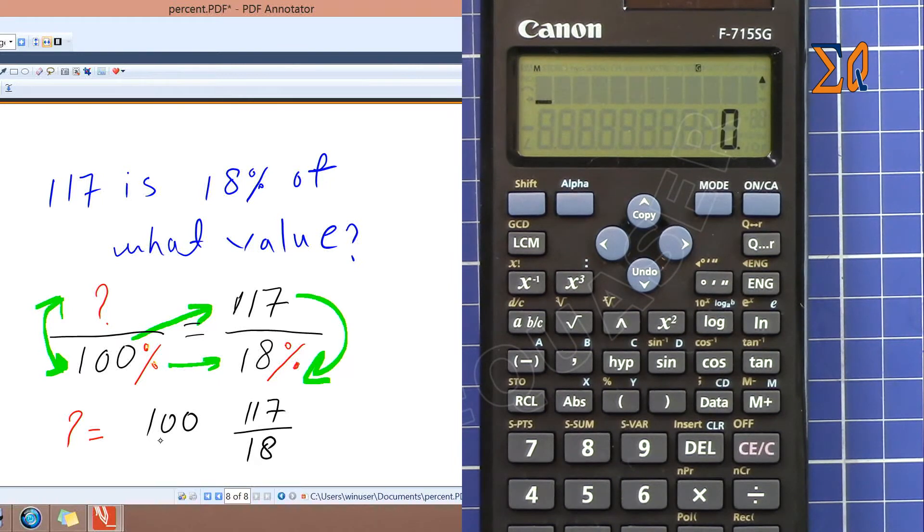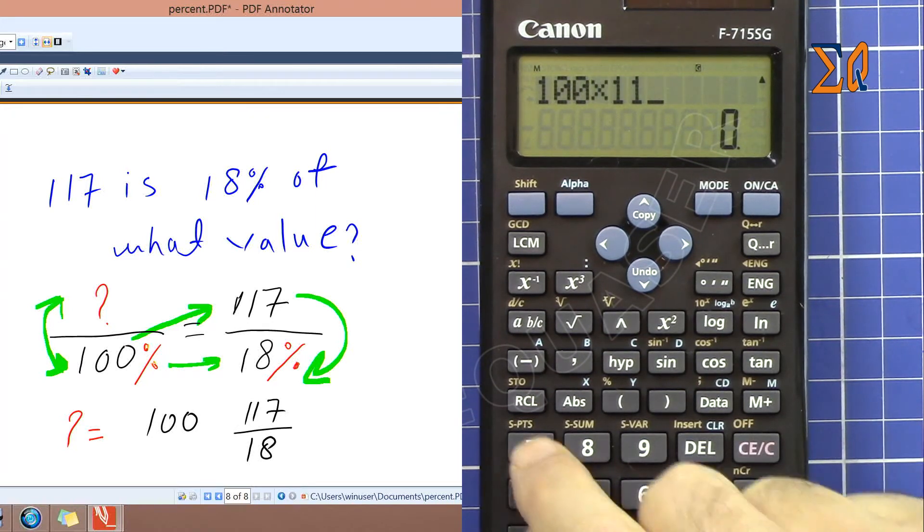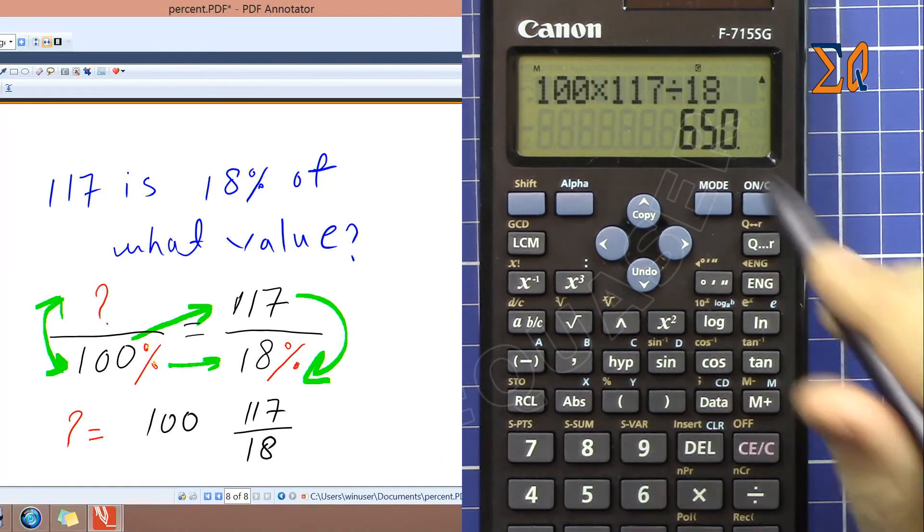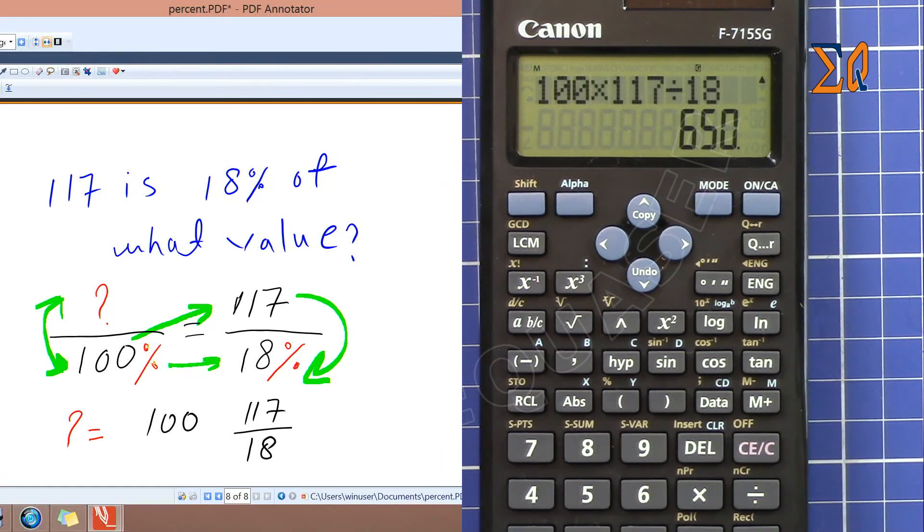So 100 times 117 divided by 18 and we get 650. Please thumb up the video, thank you for watching.